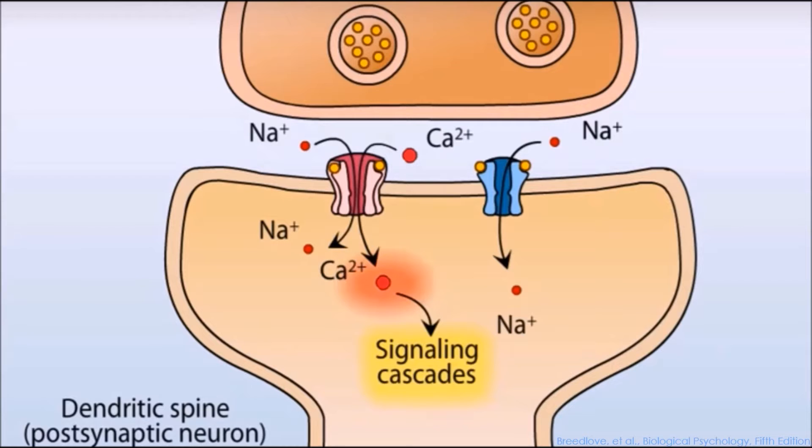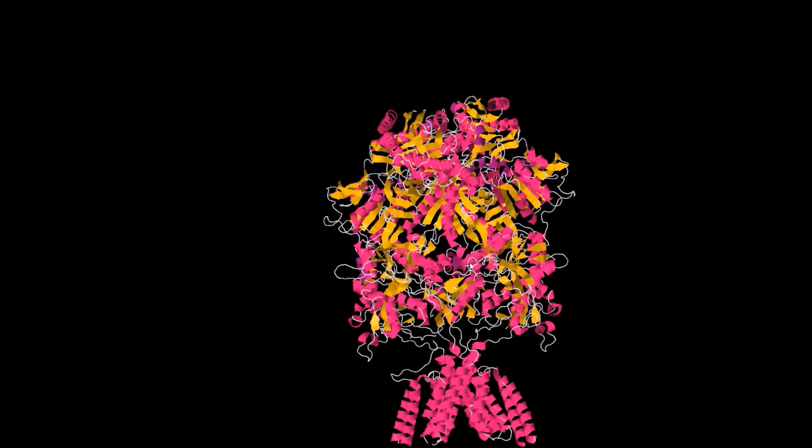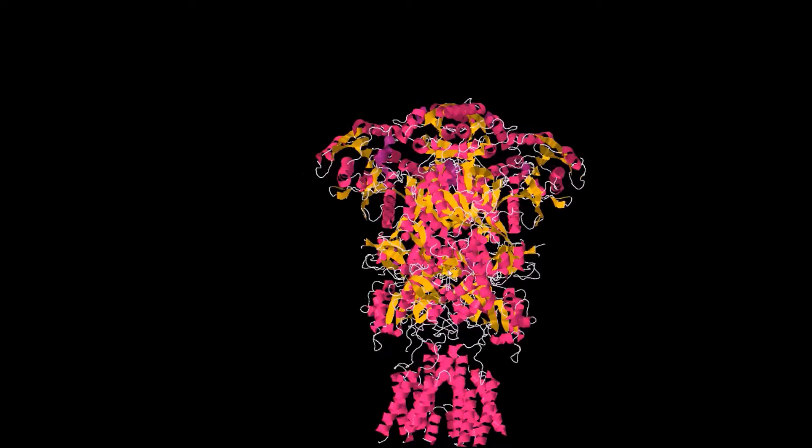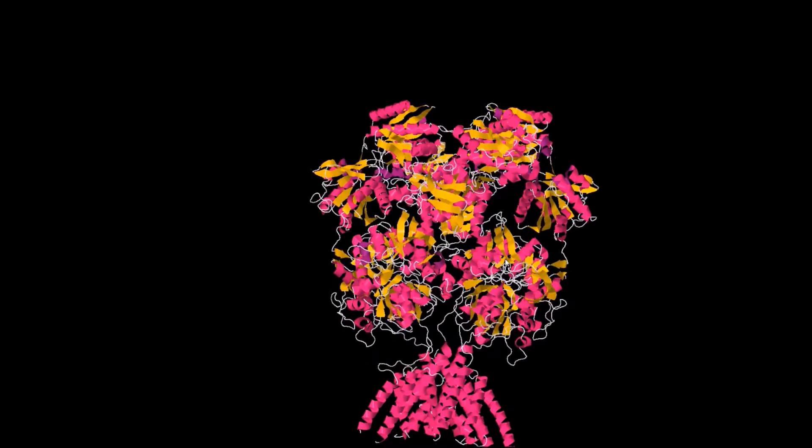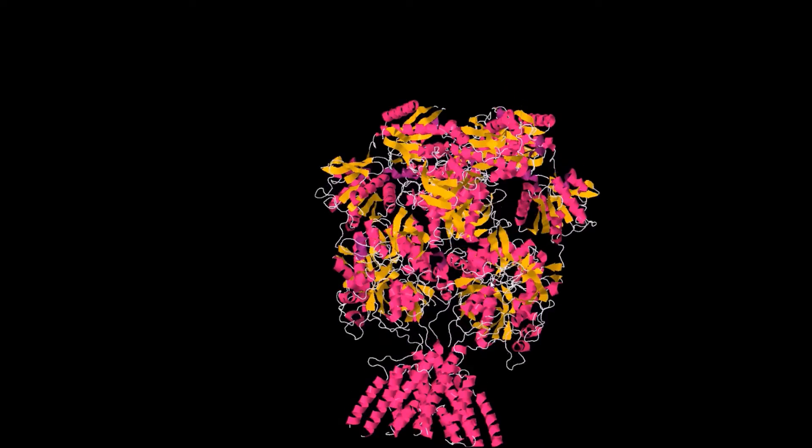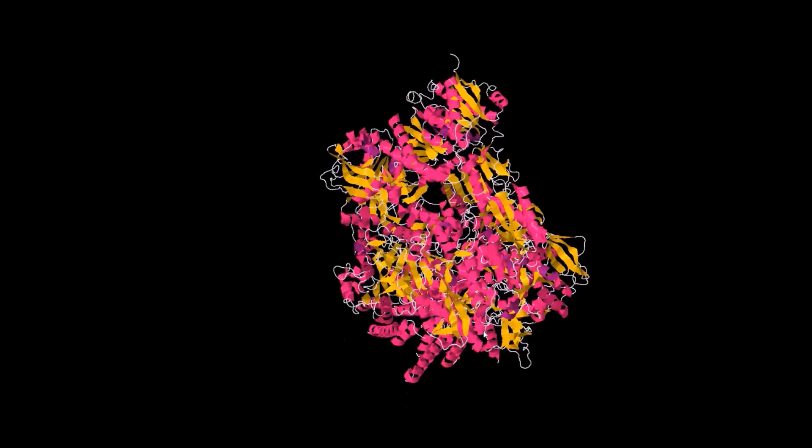Now, I'll discuss the structural features of the NMDA receptor. The NMDA receptors are a heterotetramer constructed as a dimer of dimers from two glutamate N1 subunits and two glutamate N2 subunits, each of which has multiple isoforms.